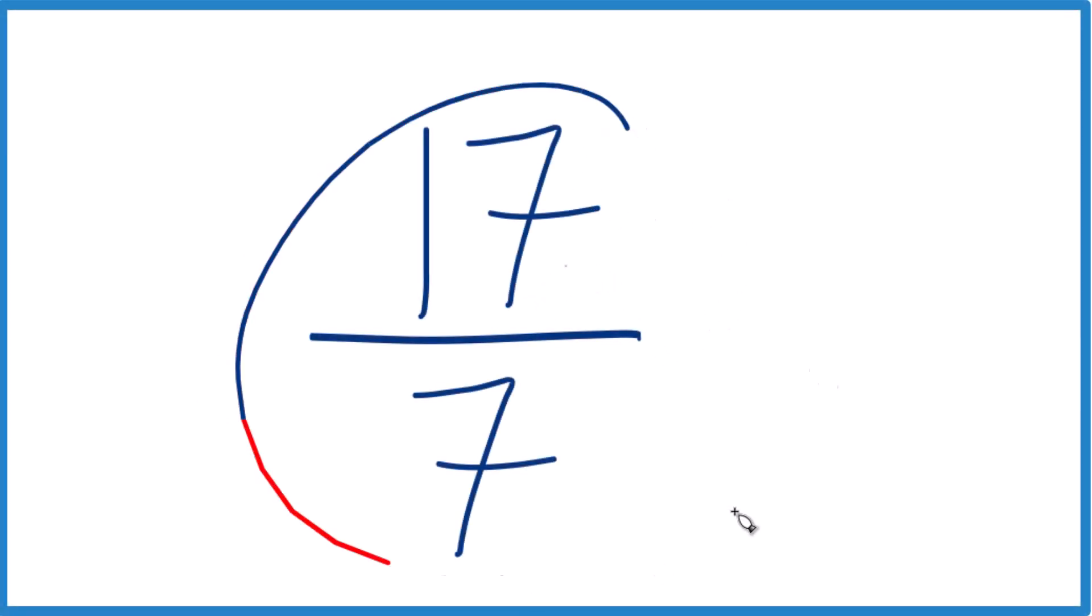Let's simplify the fraction 17 sevenths, and we can write it as a mixed number, too. When we simplify a fraction, we want to find a whole number that goes evenly into both 17 and 7.